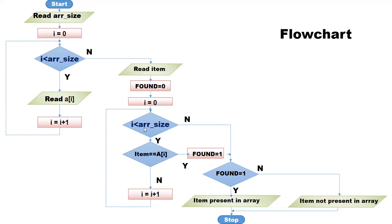Now start from the beginning: i equal to 0, i less than array size. If item equals a[i], we set the flag variable 'found' to 1 and then exit from the loop. If no, go to the next element: i equal to i plus 1. This loop continues until the end of the array if the item is not present. Once this condition becomes false, it exits from the loop. There are two exits from the loop. If the item is present, we exit through this way and 'found' is set to 1.